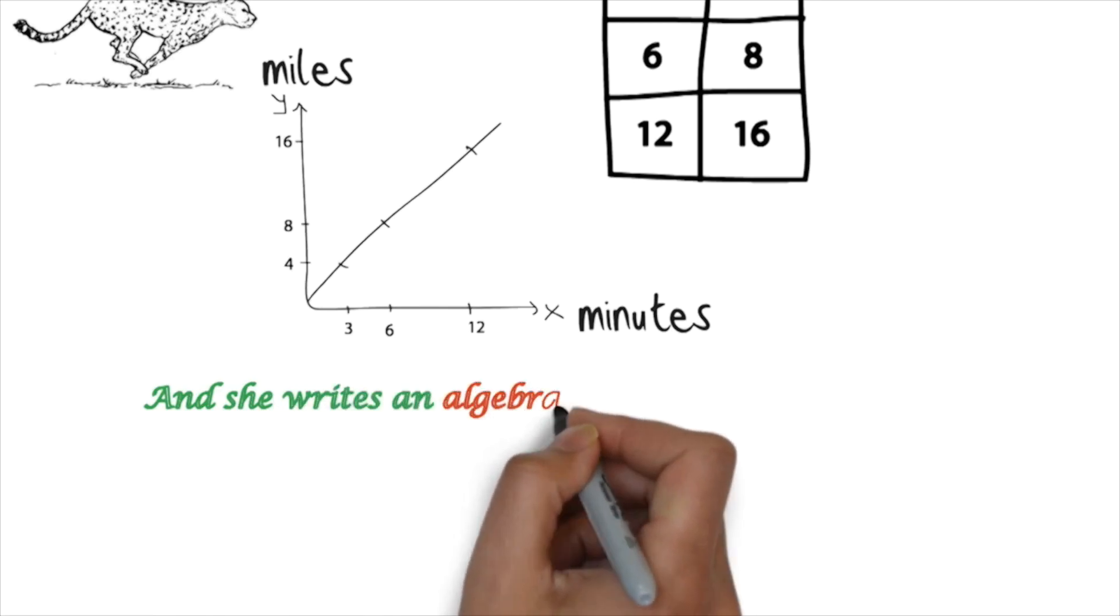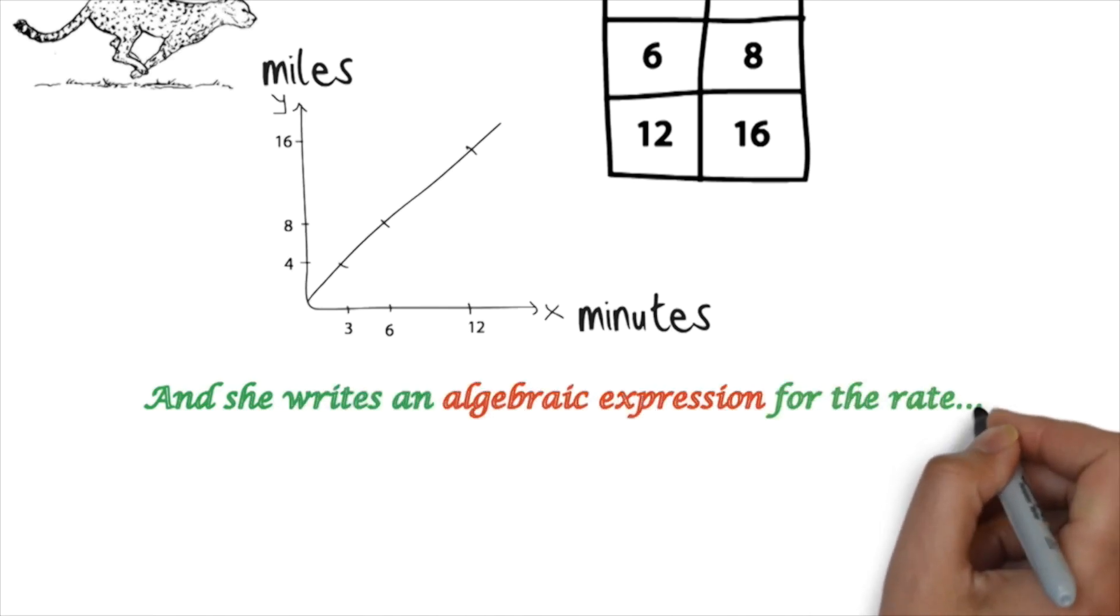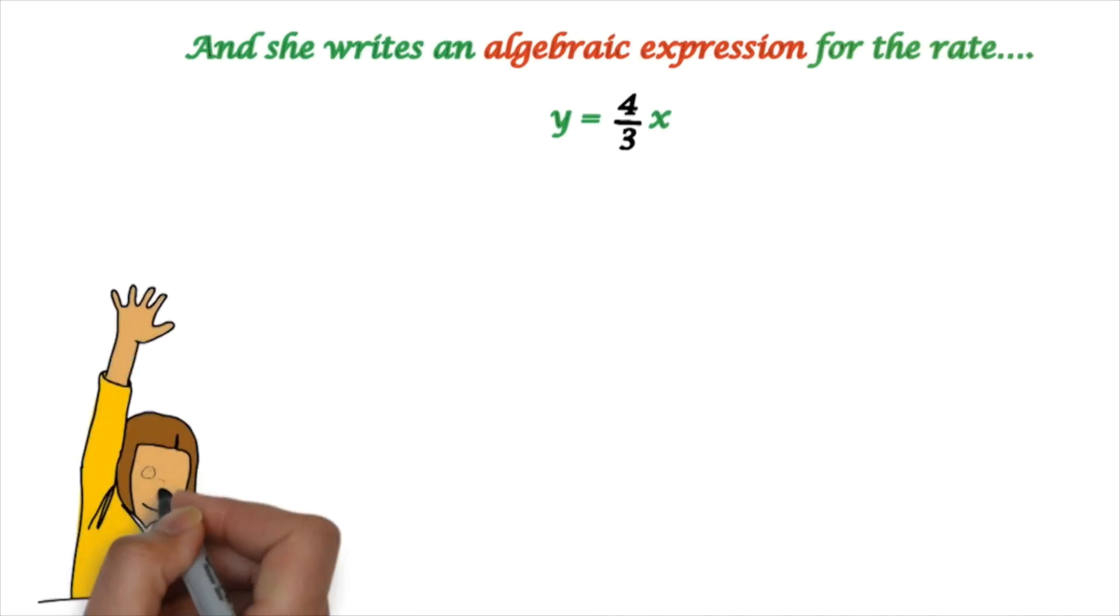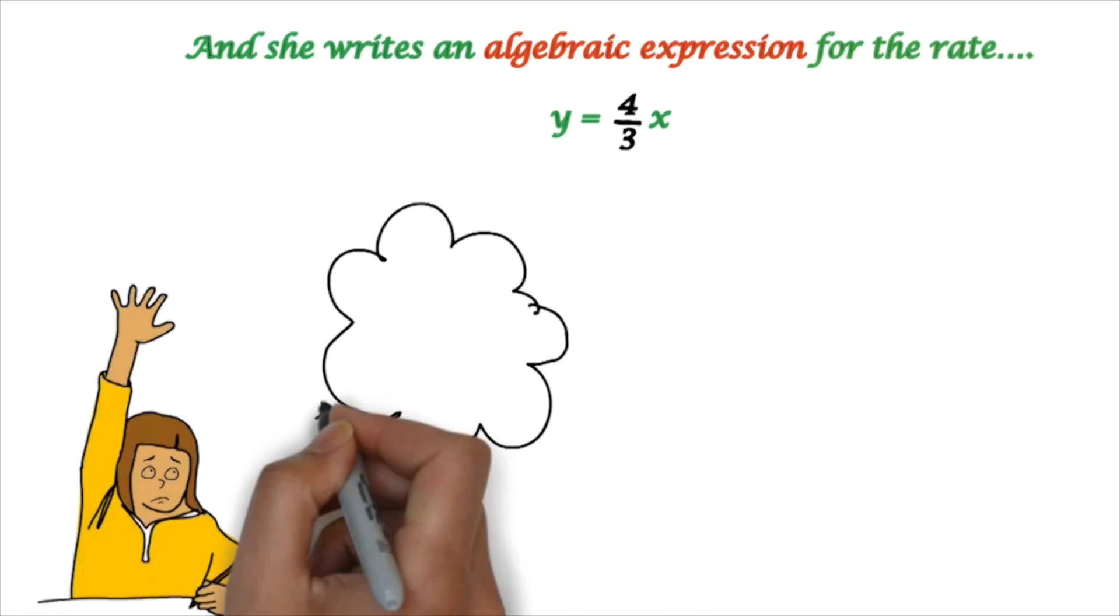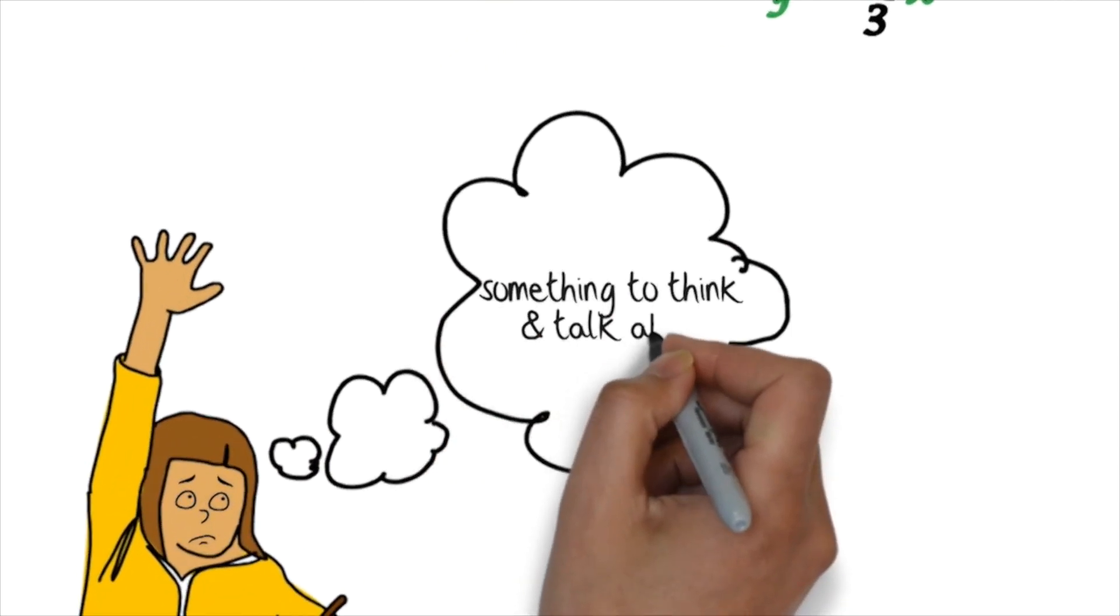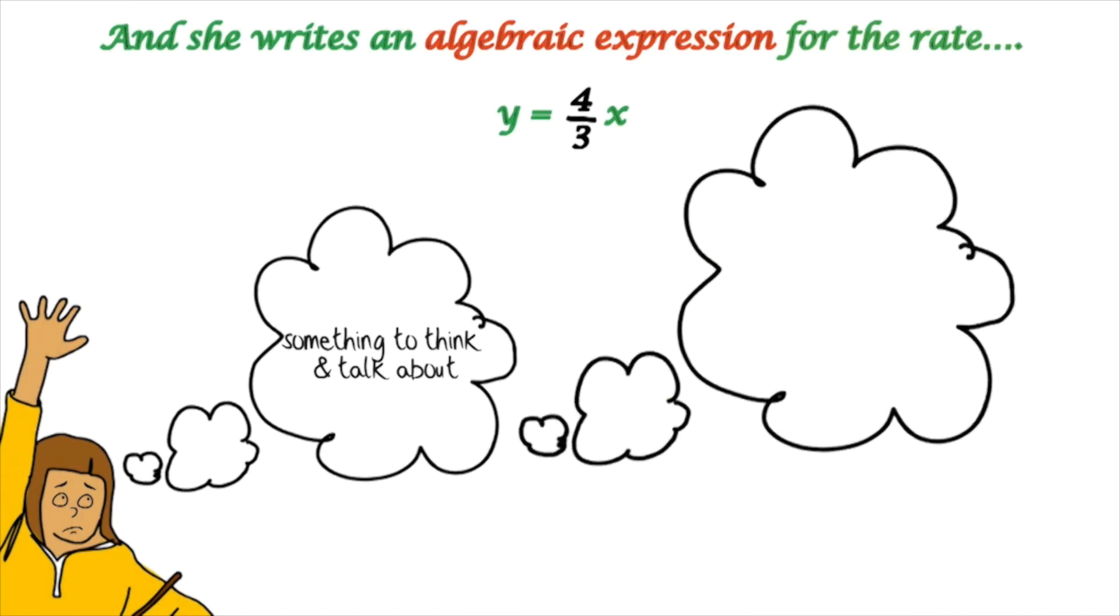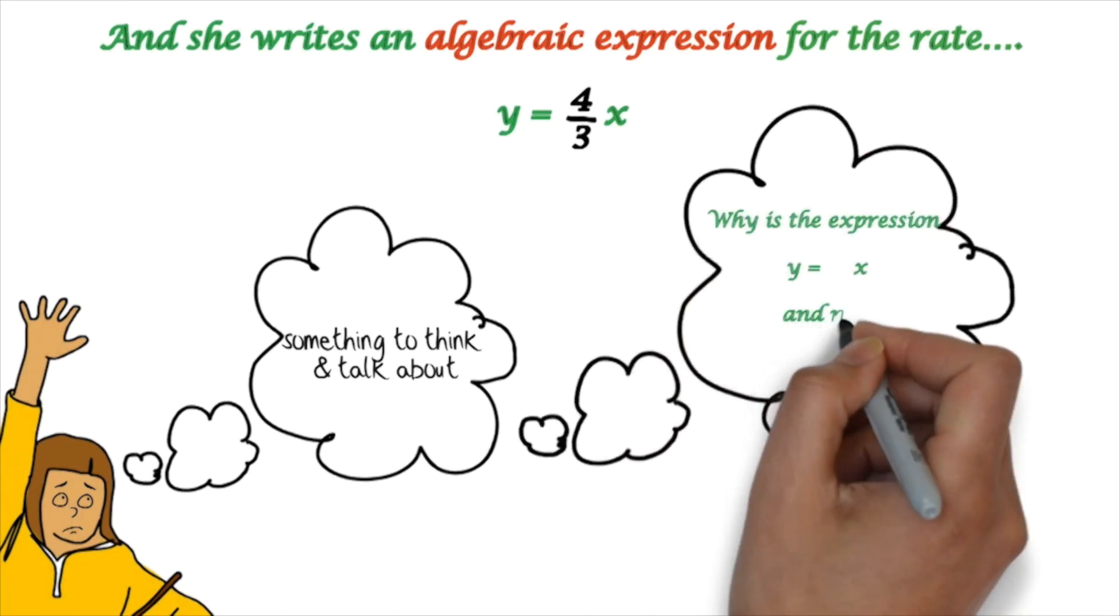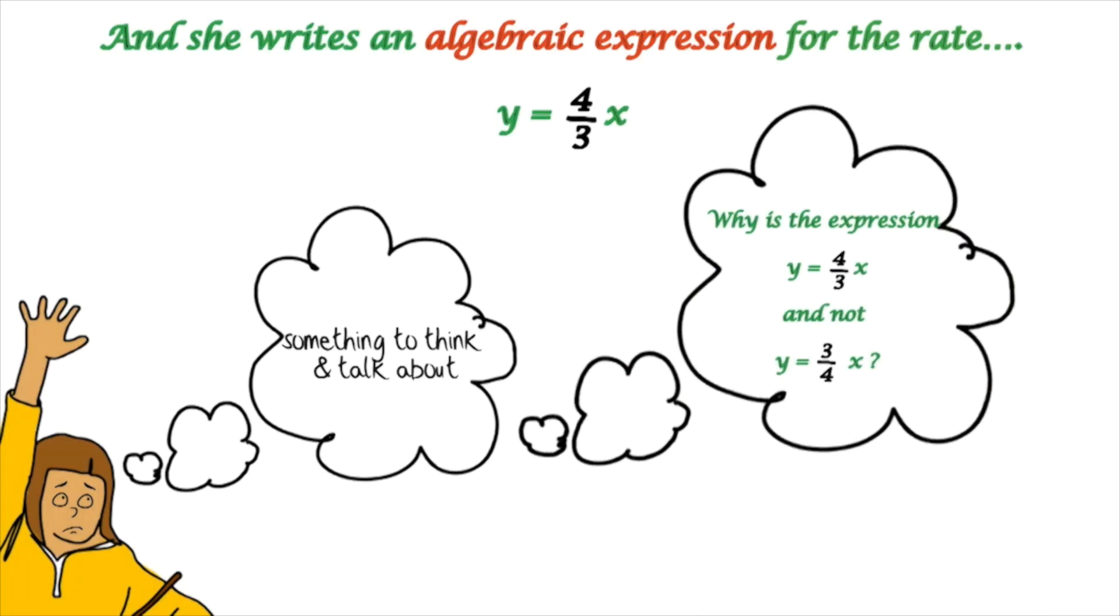And now she can write an algebraic expression for the rate, y equals 4 thirds x. But now she's pondering something to think about here, and to talk about. Why do you think it's y equals 4 thirds x, and not, for example, y equals 3 over 4 x? Something to think about.